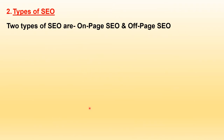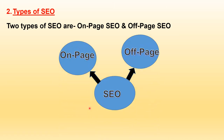SEO helps in improving the rank of a website in search engines. There are two types of optimization: on-page SEO and off-page SEO. On-page SEO focuses on optimizing parts of your website that are within your control — anything done inside the website. Off-page SEO involves ranking factors outside your website itself, used to promote it.